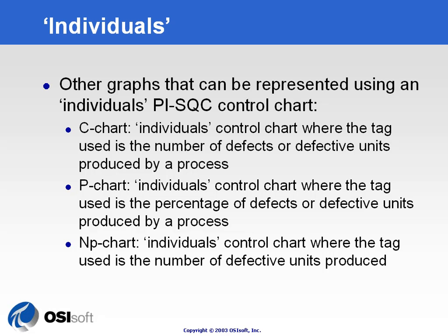The P-Chart is essentially the same information but turned into a percentage of the total number of possible defects on a piece of equipment. In this case, we're trending a percentage, and each percentage for every piece of equipment being made will be plotted against the control limits.